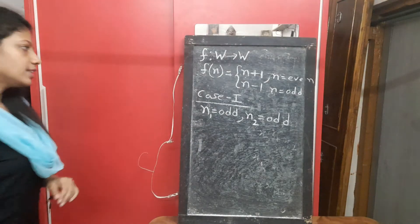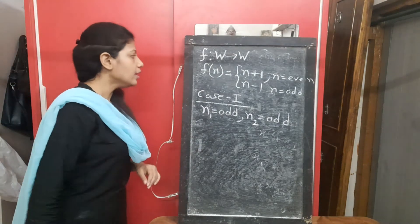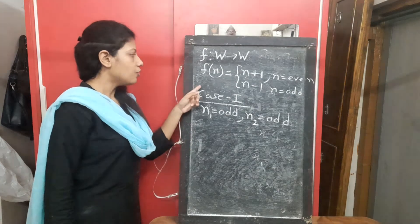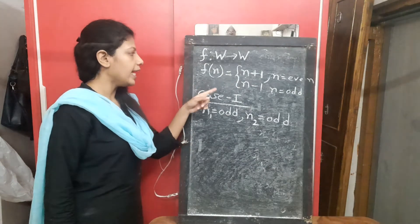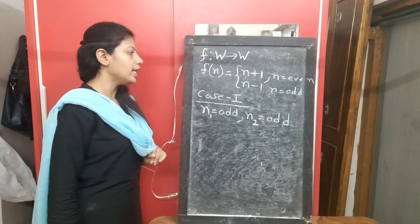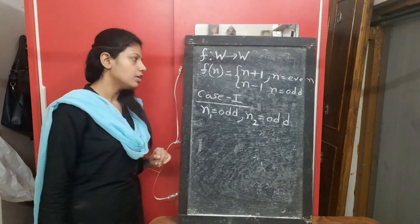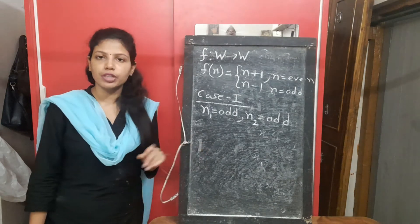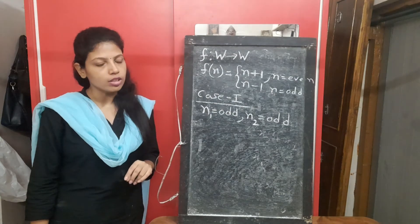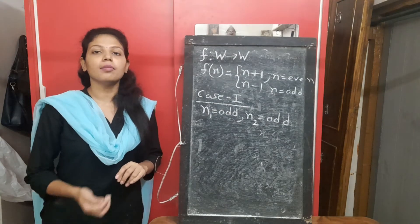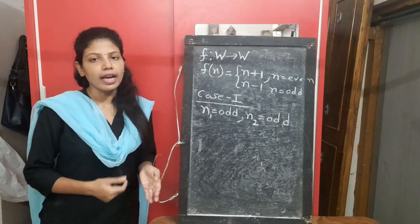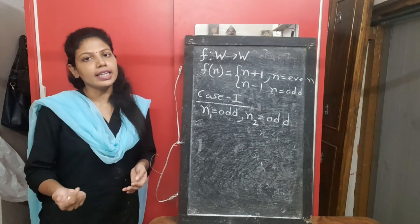Now the next example. The function f maps whole numbers to whole numbers, defined as f(n) = n+1 when n is even, and n-1 when n is odd. So here I have to take 3 cases: when both numbers are odd, when both are even, or when one is odd and the other is even.